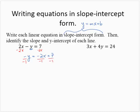This yields y equals 2x minus 7. I am now in slope-intercept form and the slope of the line is 2, the y-intercept of the line is 0, negative 7.